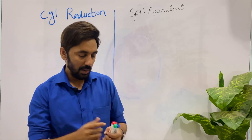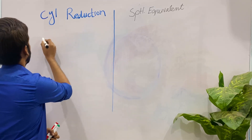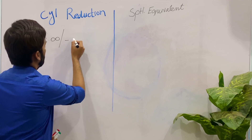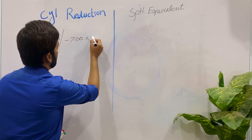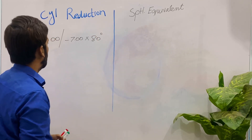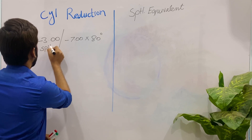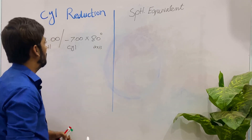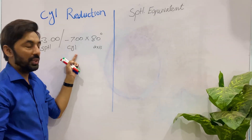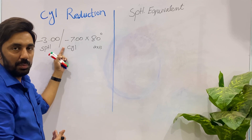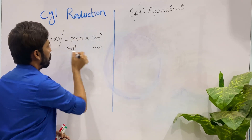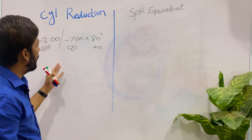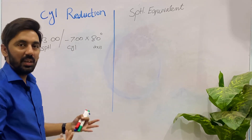For example, a patient has minus three spherical with minus seven cylinder at 80 axis. This minus three is spherical, this minus seven is cylinder, and 80 is the axis. I prescribed this to my patient, but the patient is not comfortable because the cylinder is very high, so we have to reduce the cylinder to make the patient comfortable.